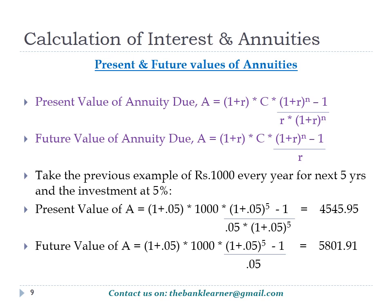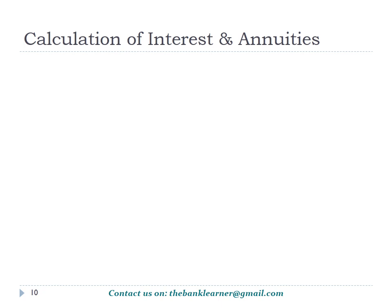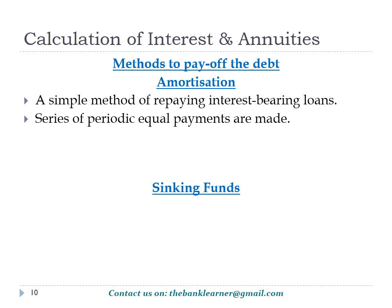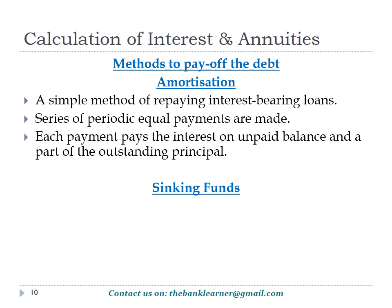Now we will look at two methods to pay off debt: amortization and sinking funds. In amortization, a series of equal periodic payments are made. Each payment pays the interest on the unpaid balance and repays a part of the outstanding principal. Therefore, as time goes on, the outstanding principal gradually gets reduced and the interest on the unpaid balance decreases.